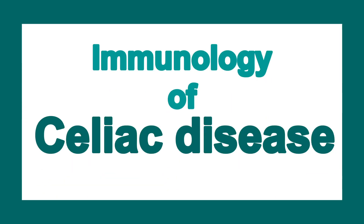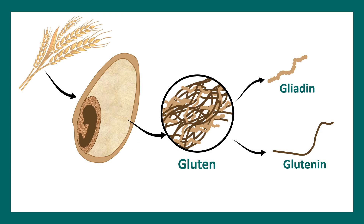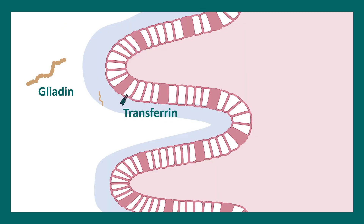Let's talk about the immunology of celiac disease. The major problem in celiac disease is gluten. Now gluten has two components: gliadin and glutenin. Gliadin is the main culprit here. Gliadin is pretty much resistant to many digestive enzymes.